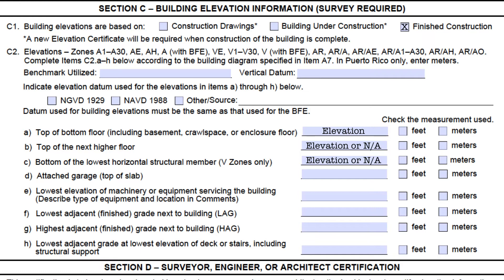C2D is a tricky one. Remember from the discussion for section A, we talked about when something is an attached garage and when it isn't. If the building has an attached garage — meaning it's a non-elevated building, diagrams 1A, 1B, 2A, 2B, 3, 4, and 9 — then an elevation gets entered in this field. If the EC is for an elevated building, diagrams 5, 6, 7, or 8, then there technically is no attached garage and an NA should be entered here. If square footage, number of openings, or anything else is entered in A9 for an elevated building, it will be considered an error if C2D is left blank, unless the surveyor's comments in section D clearly explain all floor elevations and their uses.